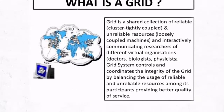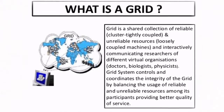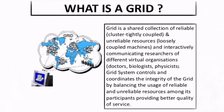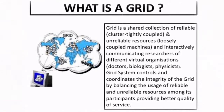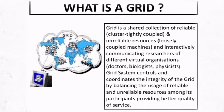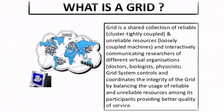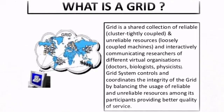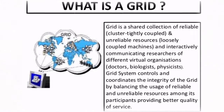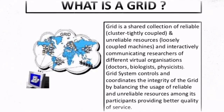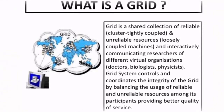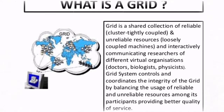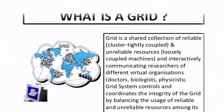What is a grid? A grid is a shared collection of reliable and unreliable resources, with interactively communicating researchers from different virtual organizations. A grid system controls and coordinates the integrity of the grid, balancing the usage of reliable and unreliable resources among its participants and providing better quality of service.